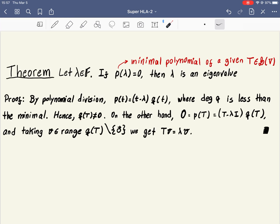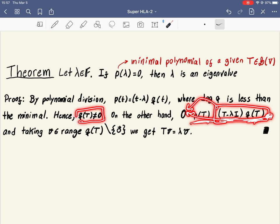If q of t cannot be zero, look what is p of t equal: the composition of t minus lambda i with q of capital T. This is zero, which means whatever vector we put here will give us zero. However, since q of t is not zero, there exists some, the range is not just zero, there exists non-zero vectors in the range of q of t.